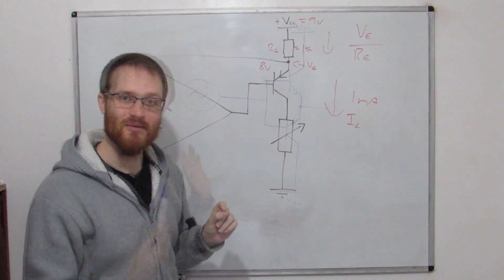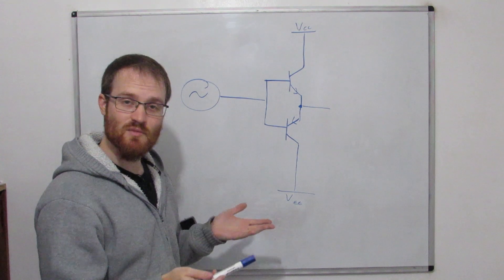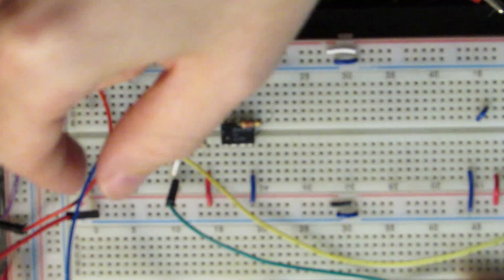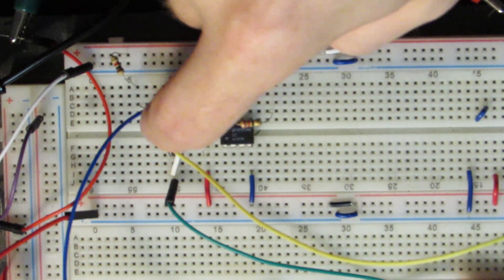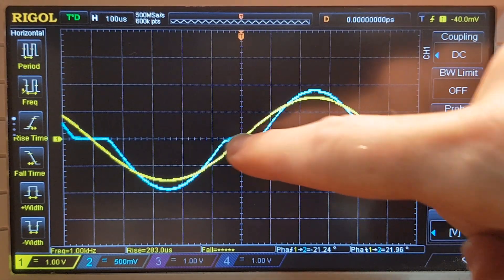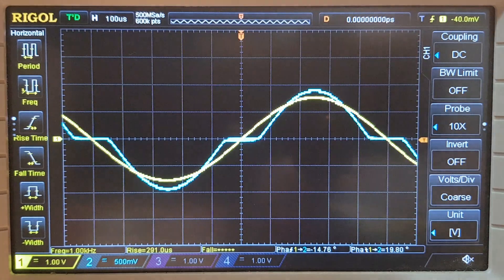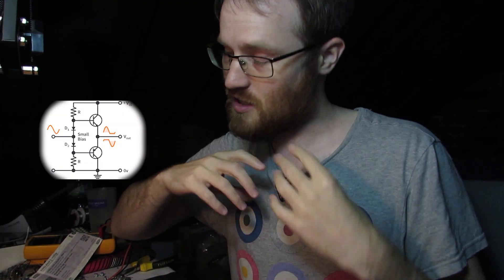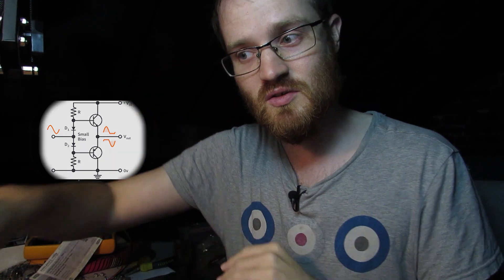We can hide all sorts of things in the feedback loop of an op amp. Here's a class AB push-pull amplifier circuit you've probably seen before — it has a massive flaw. On the bench, the yellow signal is the input and the blue signal is the output. Driving these two transistors with a sine wave, we can see classic crossover distortion: as we go between plus and minus 0.7V there's not enough voltage to turn either transistor on, creating a dead zone. We've used diodes in the past to bias the transistors, but today we're going to see if the op amp can fix this for us.